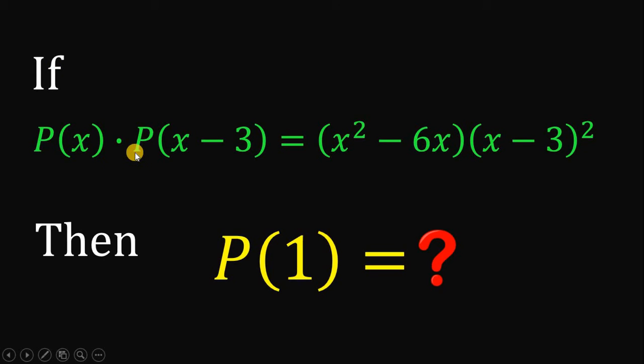If P(x) times P(x minus 3) equals x squared minus 6x multiply by x minus 3 quantity squared, then the question is what is the value of P(1)?